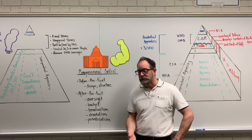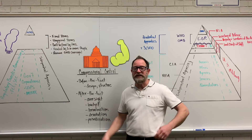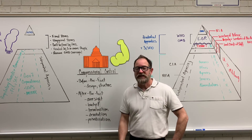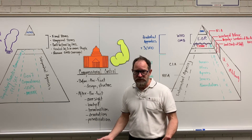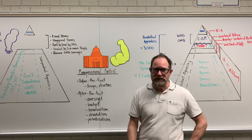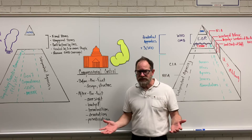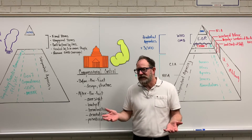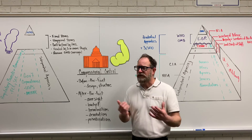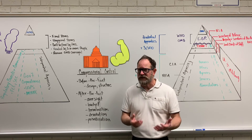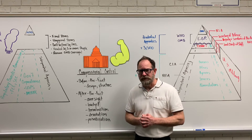Finally, there is privatization: Congress decides the government doesn't need to be doing a particular task and lets private entities take over. When George W. Bush came into office, he had the idea of privatizing Social Security - that never happened, but it is a tool that exists: taking what's publicly owned and run by the government and privatizing it, letting private industry, private companies, or private individuals take care of that.